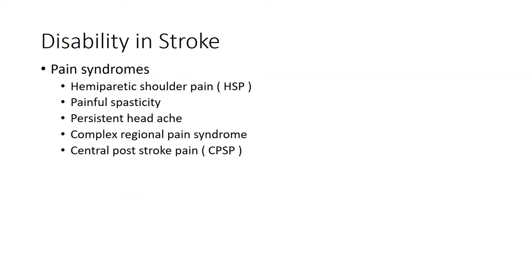There are multiple pain syndromes described in post-stroke patients that significantly affect independence. Hemiplegic shoulder pain or shoulder stiffness is a recognized factor affecting most activities of daily living. Some have painful spasticity or persistent headache. Complex regional pain syndromes and central post-stroke pain have different etiological mechanisms and are challenging to treat, though all are part of post-stroke disability.